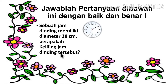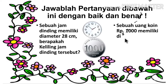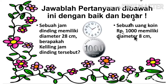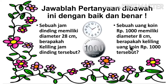Kalian kerjakan di buku tulis kalian dan nanti dikumpulkan saat masuk sekolah. Soal yang kedua: sebuah uang koin Rp1.000 rupiah memiliki diameter 8 cm. Berapakah keliling uang koin 1.000 rupiah tersebut? Ada dua soal yang harus kalian kerjakan di buku dan dikumpulkan saat masuk sekolah.